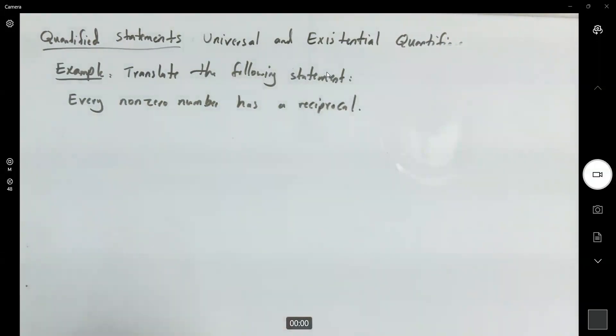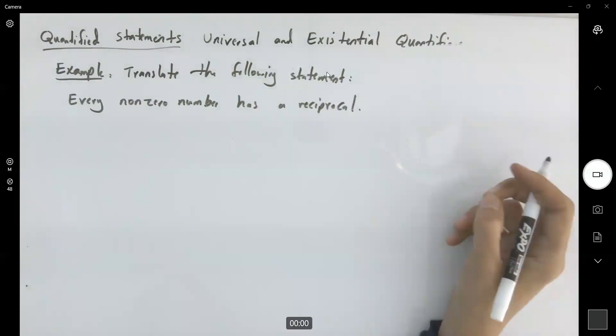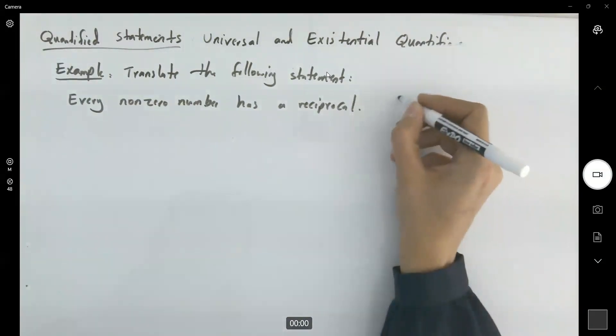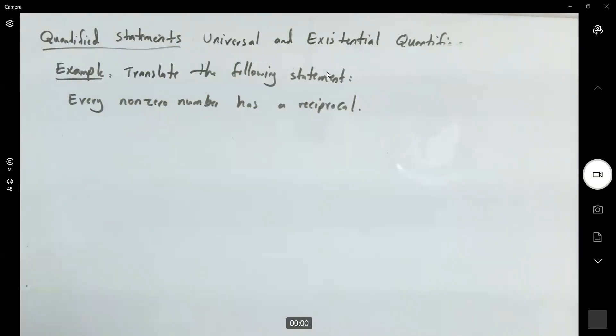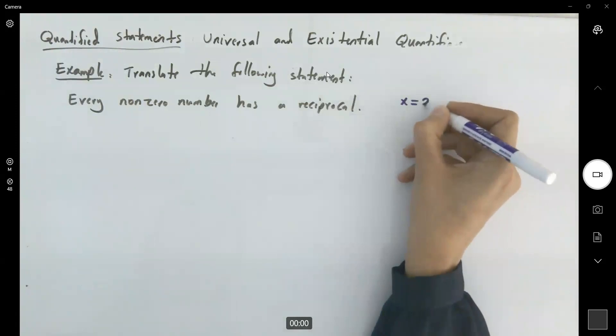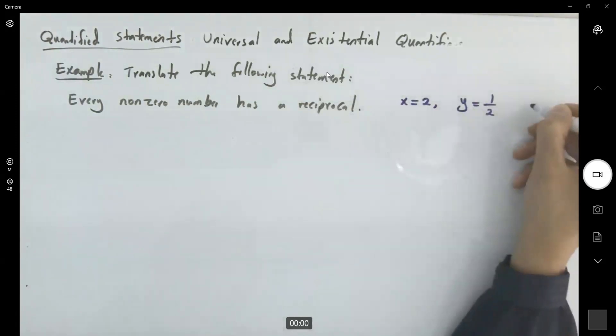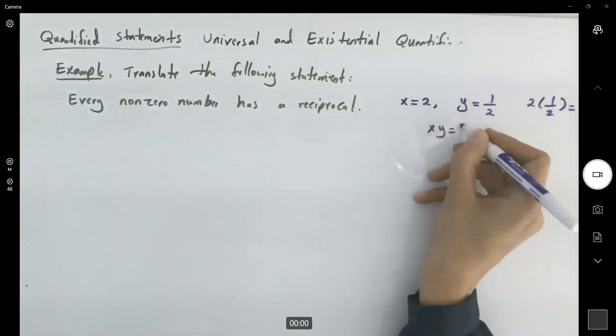Remember, how do we define the reciprocal? If you have real number a, this is what we learned before. Suppose we consider 2, x is 2, then you can find another number, a half, which 2 times a half is equal to 1, or xy is equal to 1.